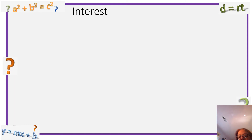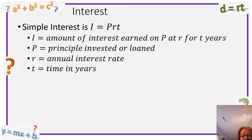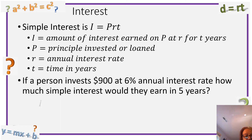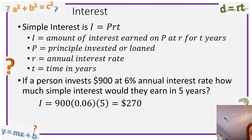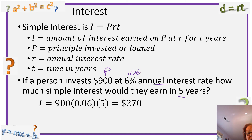There are also some interest questions. Simple interest is I equals PRT. I is the amount of interest earned, P is the principal — the amount invested or loaned, R is the annual interest rate, and T is the time in years. For example: if a person invests $900 at 6% — written as 0.06 — annual interest rate, how much simple interest would they earn in five years? T is five, so plug it in: I equals 900 times 0.06 times 5. The answer is $270.